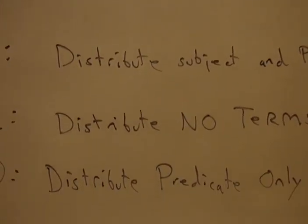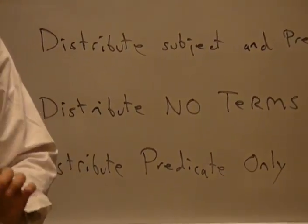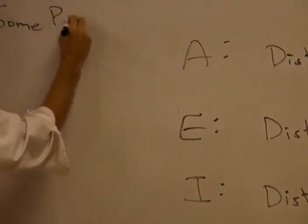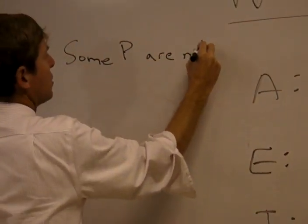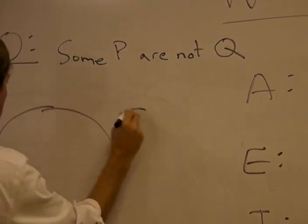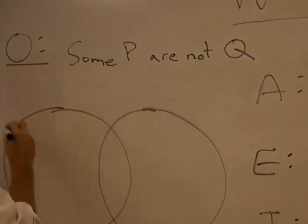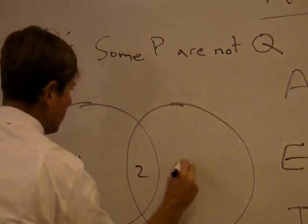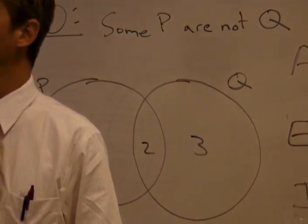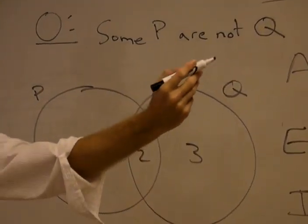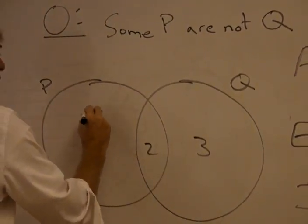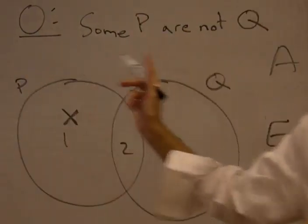Now remember an O statement is called a particular negation and it would look something like this: some P are not Q.